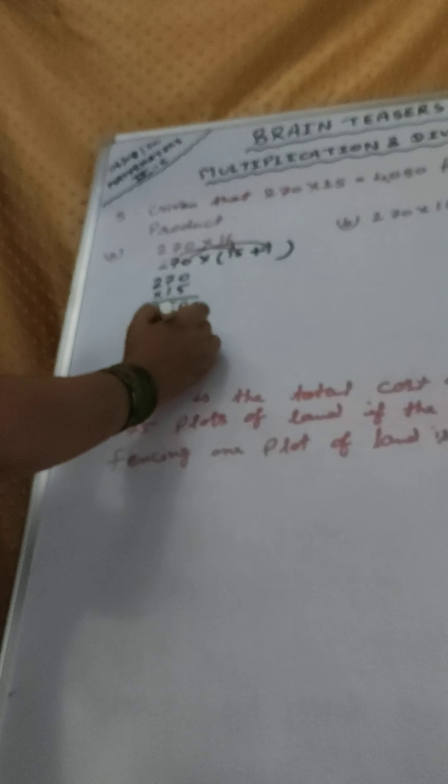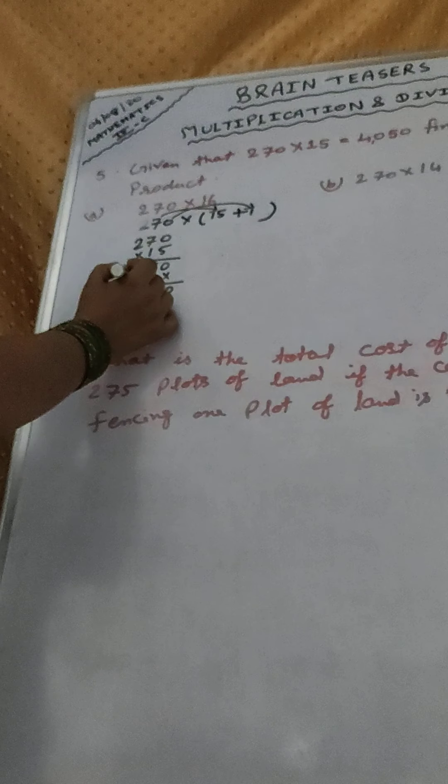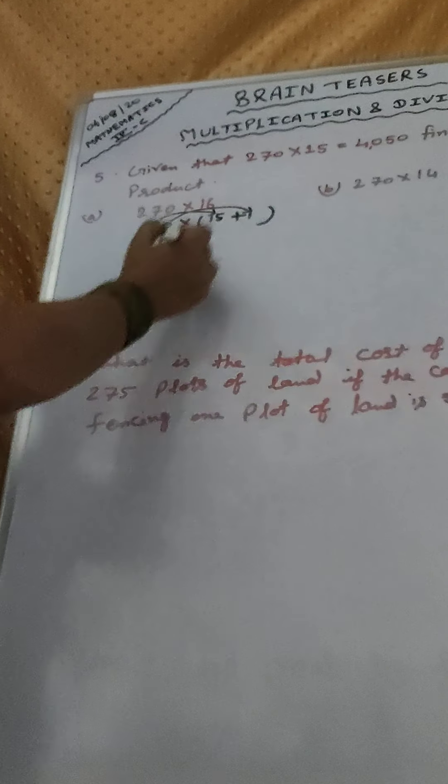That will be 0, 5. 7 plus 3, 10, carry 1. 2 plus 1, 3 plus carry 1, 4. We can again write.